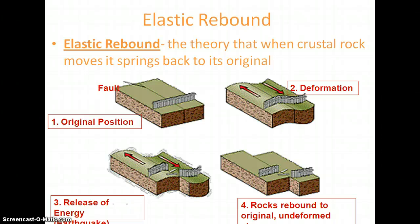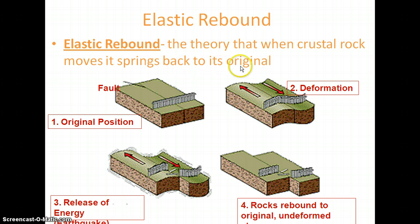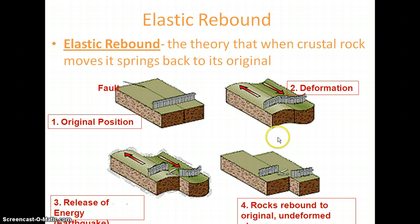Next we are coming to the main theory of earthquake — it is the elastic rebound theory. What does elastic rebound mean? The theory states that when a crustal rock moves, it springs back to its original position. Here you can see the original position of the rock. The second figure shows the deformation due to earthquake — some vertical or horizontal force may cause the plate to move.